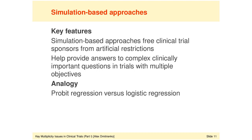Simulation-based approaches require access to computational power, but it is no longer a concern. As a relevant example, probit regression was much more popular before statisticians started actively using computers because it was more convenient computationally. But we all now use primarily logistic regression because the results are easier to interpret—we can talk about odds ratios—and we are no longer limited by artificial restrictions. Likewise, when it comes to simulation-based approaches in clinical trials, we should take full advantage of available computing power.